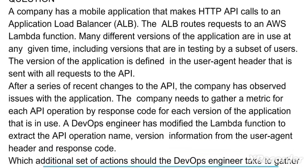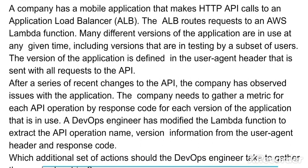The first question is: a company has a mobile application that makes HTTP API calls to an Application Load Balancer, that is ALB. The ALB routes requests to an AWS Lambda function. Many different versions of the application are in use at any given time, including versions that are in testing by a subset of users.